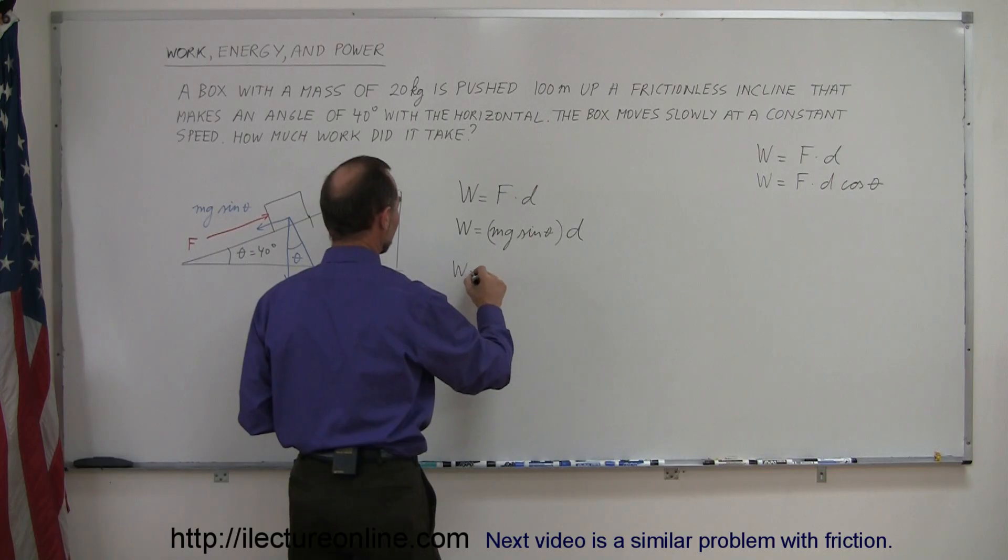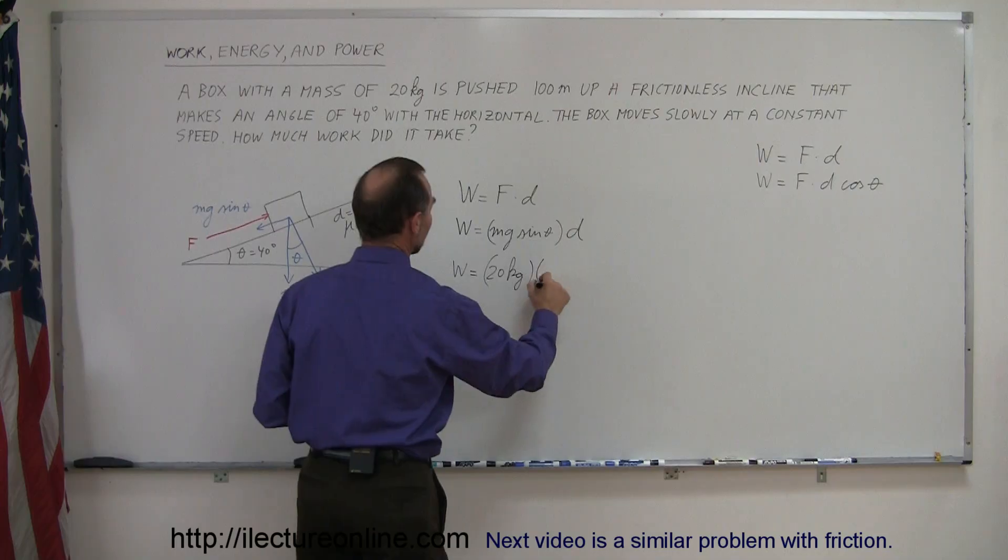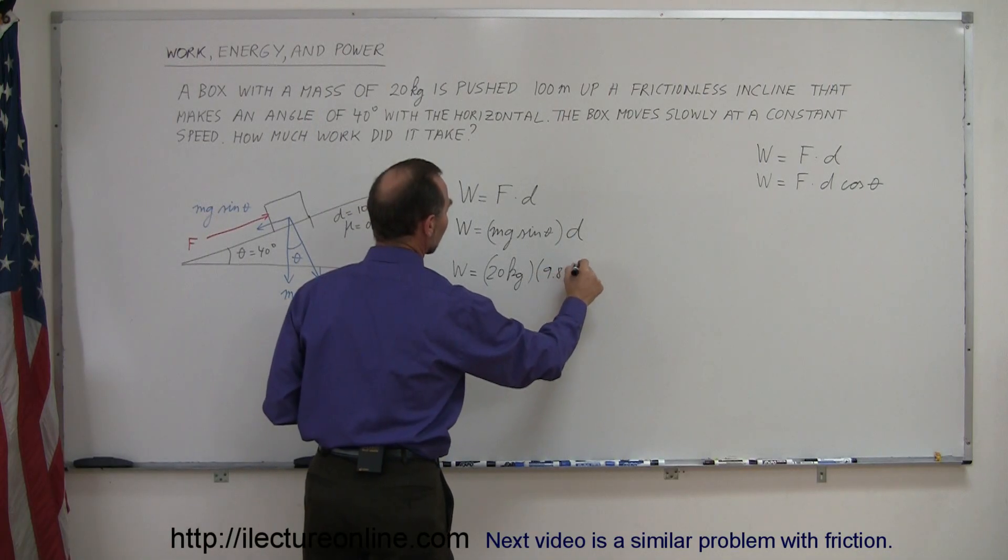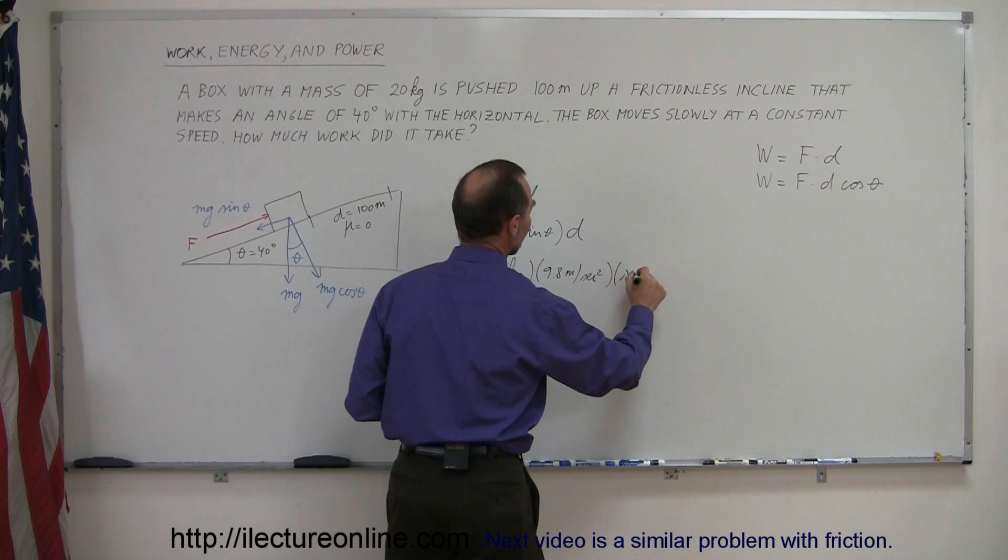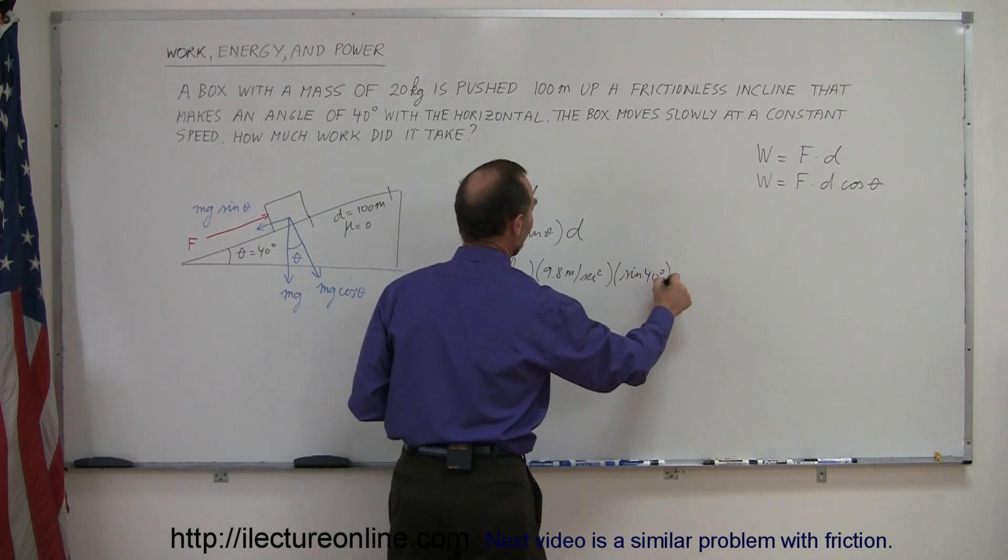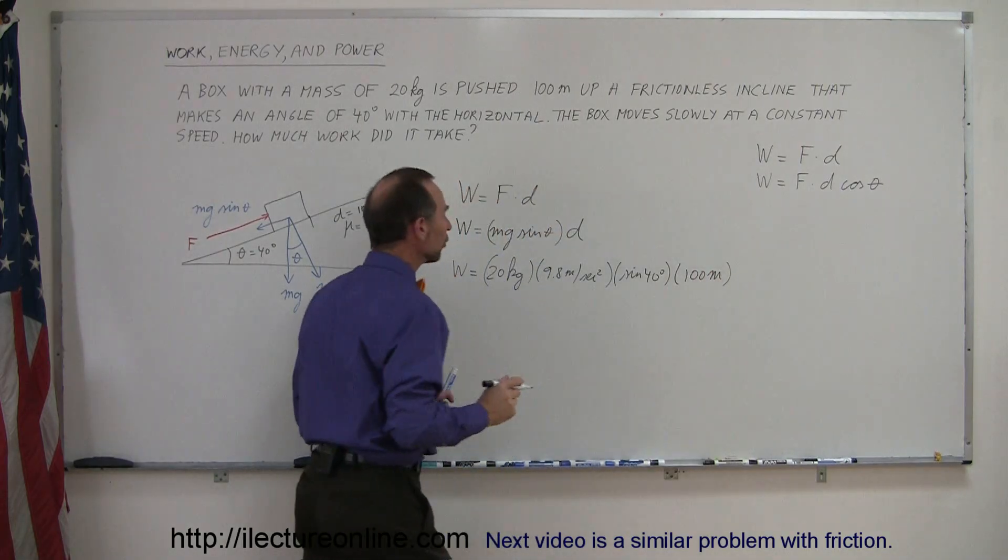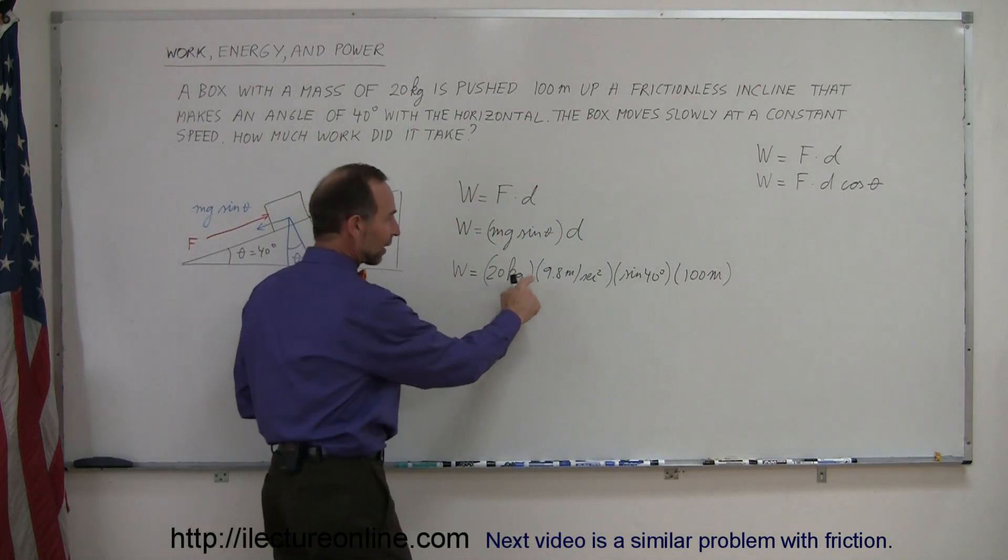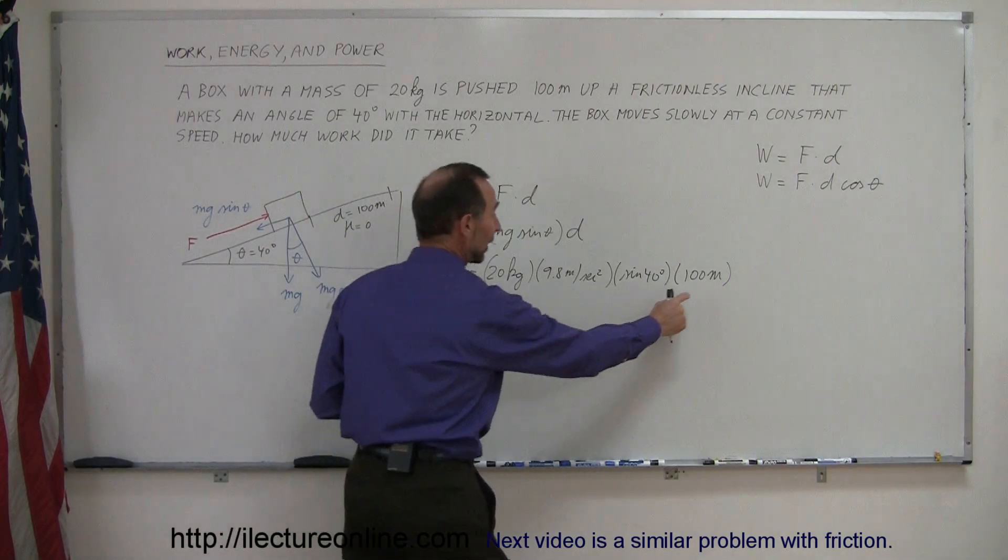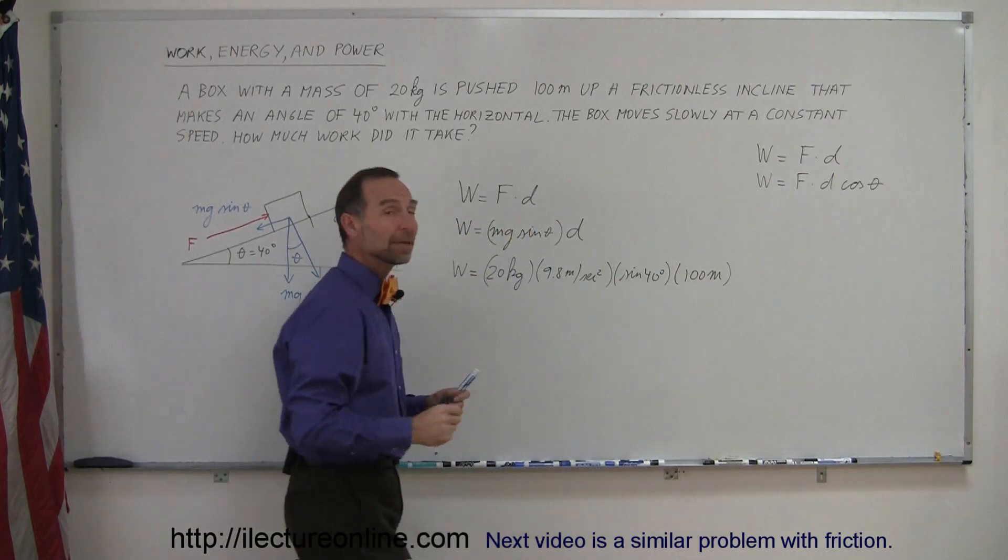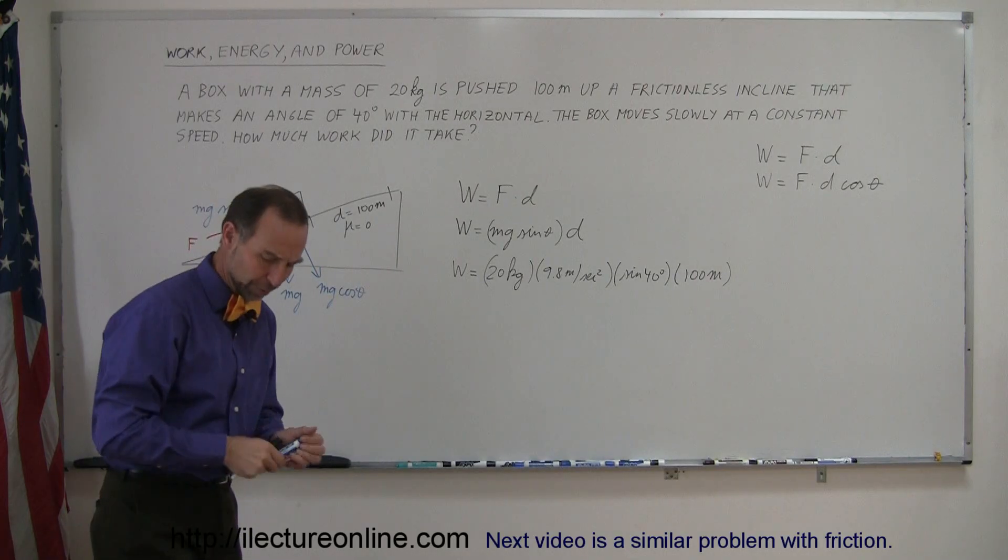So work equals the mass, 20 kilograms, times the acceleration due to gravity, 9.8 meters per second squared, times the sine of 40 degrees, times the displacement, 100 meters. Notice units-wise, kilograms meters per second squared is the same units as newtons. And then we have meters, so the answer will be newton meters, and newton meters is the same as joules.